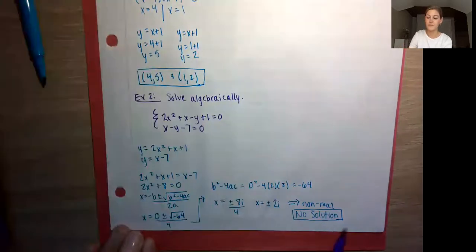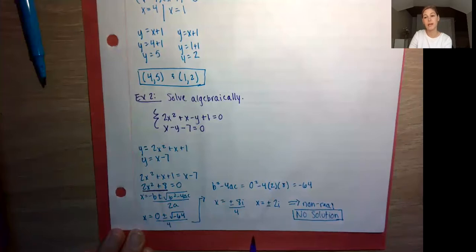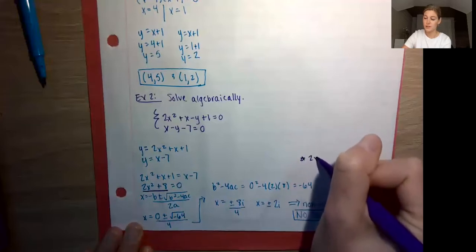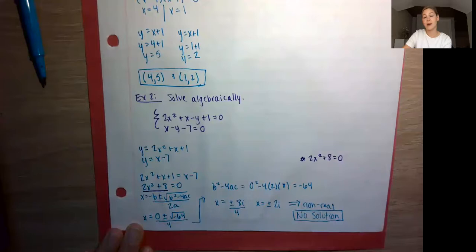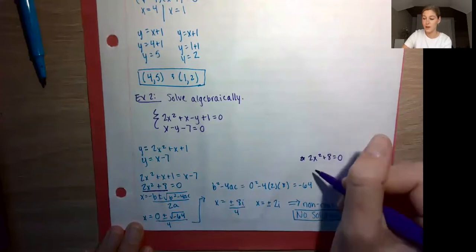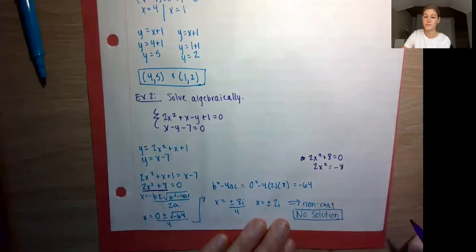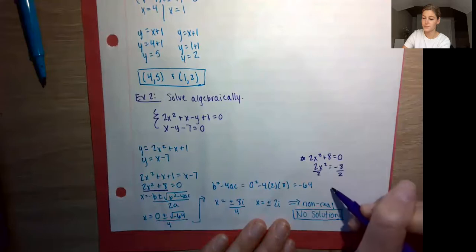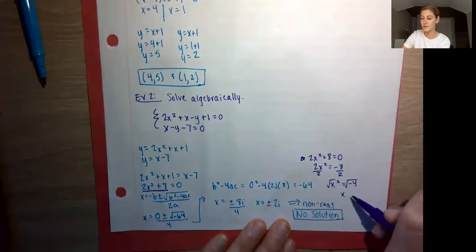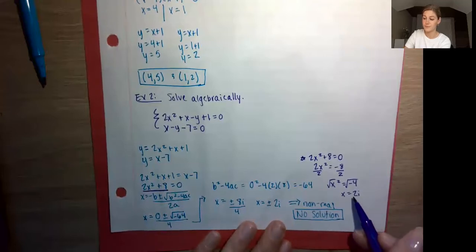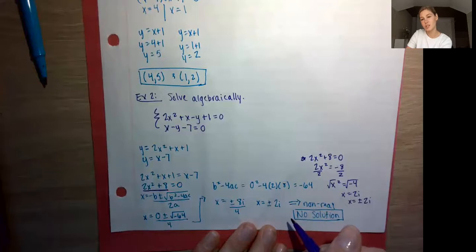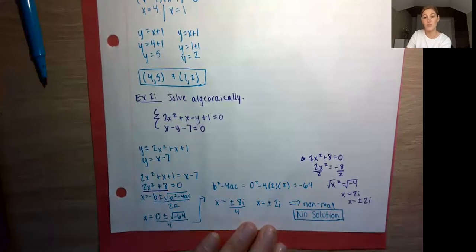One note: at the step where we have 2x² + 8 = 0, another approach to isolate x is to divide both sides by 2, giving x² = −4, so x = ±√(−4) = ±2i. That's the same answer — just an easier method if you spot it. Since we're just solving for x, you can use whichever method you find simpler.